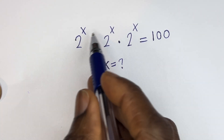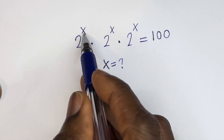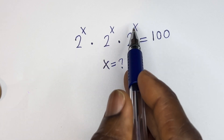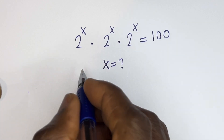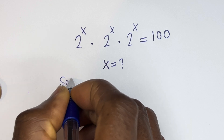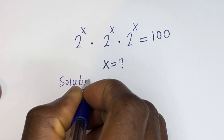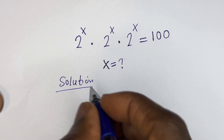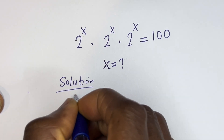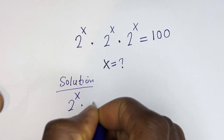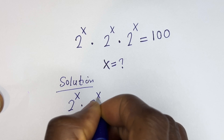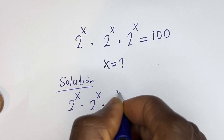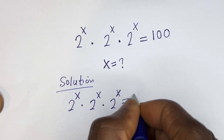Hello. How to solve for x in this equation: 2 to the power of x, multiplied by 2 to the power of x, multiplied by 2 to the power of x, is equal to 100. Solution: we have 2 to the power of x multiplied by 2 to the power of x multiplied by 2 to the power of x is equal to 100.